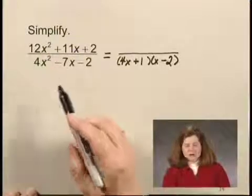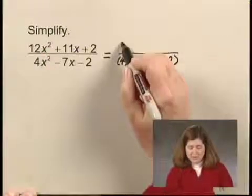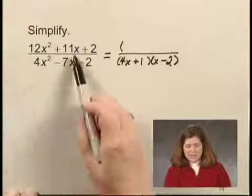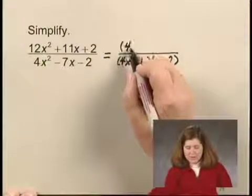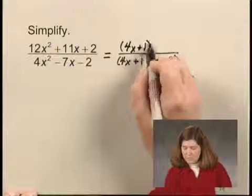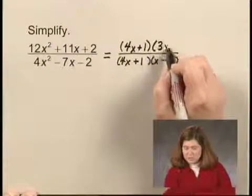And I might try several trials, but I would find that, indeed, 12x squared plus 11x plus 2 factors into 4x plus 1 times 3x plus 2.